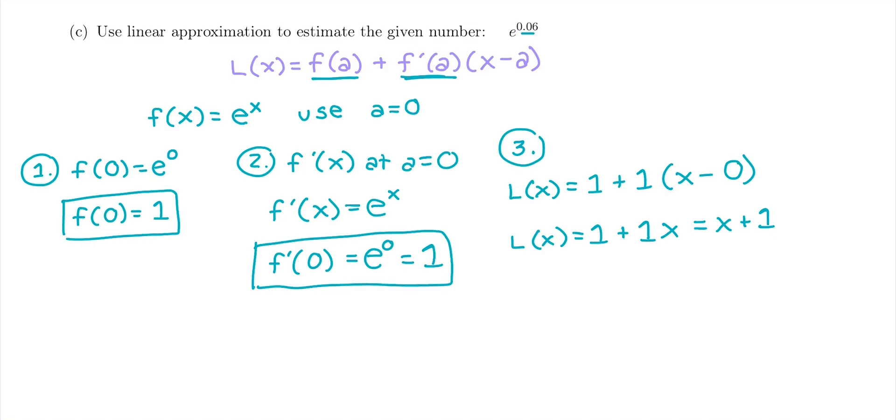So we're trying to estimate e to the 0.06, which will approximately be L of 0.06, which is going to be 0.06 plus 1. In other words, our approximation is 1.06.